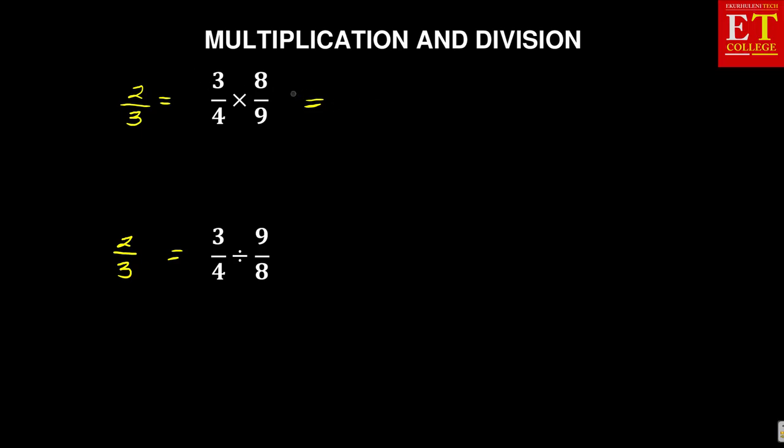So now the first one is 3/4 times 8/9. Whenever we're multiplying, you have to check across whether they are canceling. If they are canceling across, you can cancel, and then you multiply horizontally. We can see that 3 can get into 9 three times, and 4 can get into 8 two times.